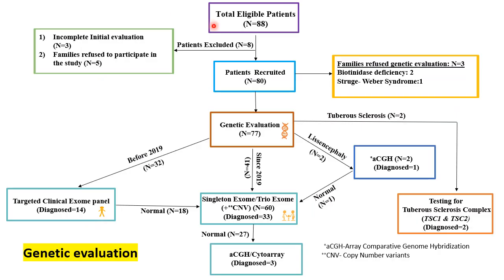Out of the total 88 eligible patients, 80 babies were recruited and 77 of them underwent genetic evaluation. Before 2019, we did a stepwise approach and started with a clinical exome panel; if normal, we did single or trio exome sequencing. Since 2019, we directly did single or trio exome sequencing, and if next-generation sequencing was normal, we did a microarray test. In two babies diagnosed with tuberous sclerosis, we directly did TSC1 and TSC2 gene sequencing, and in two babies thought to have lissencephaly, we did microarray and if normal, single or trio exome sequencing.